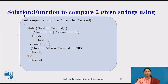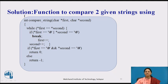This is the solution: the function integer compare_string receives pointers first and second from main. In a while loop, if the content of pointer first equals the content of pointer second and it is not null, both pointers are incremented. Once the null character is reached, it returns 0. If at any point the comparison does not match, the loop exits without reaching null and returns 1.